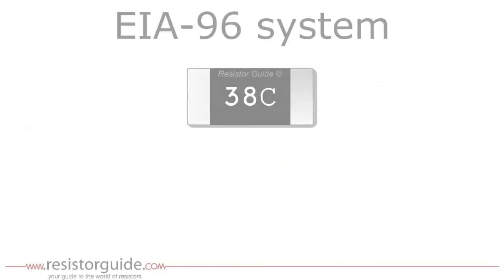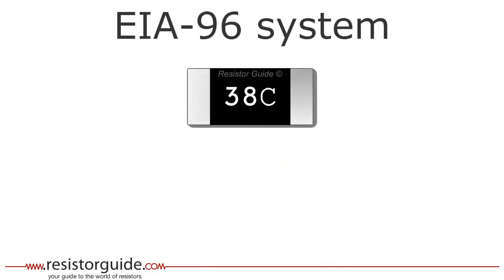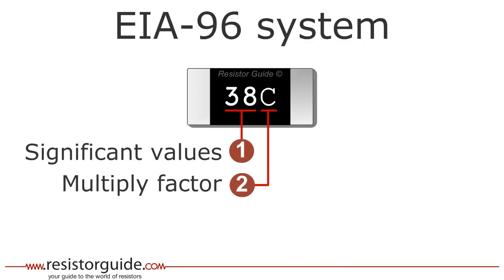Now we take a look at another popular coding method: the EIA-96 system. This system is based on the E96 series of preferred values, so these resistors should have an accuracy of 1%. The first two digits represent a code that is used with a table to find the resistance value with three digits.